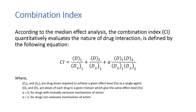For mutually exclusive drugs that have the same or similar modes of action, alpha will be set as zero. For mutually non-exclusive drugs that have totally independent modes of action, alpha equals one. For three-drug combinations, a third term D3 over DX3 can be added to the equation.